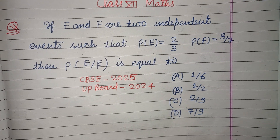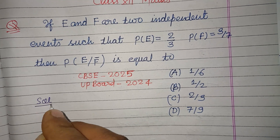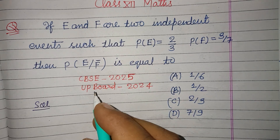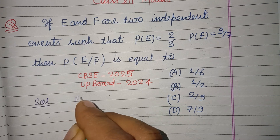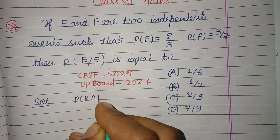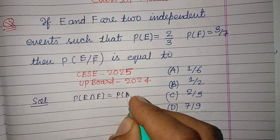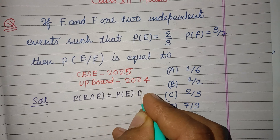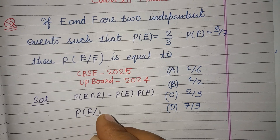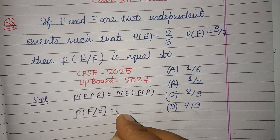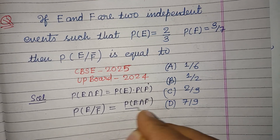then P(E|F̄) is equal to what? This question is based on probability. Since E and F are two independent events, P(E∩F) = P(E)·P(F). Here we require P(E|F̄) = P(E∩F̄) / P(F̄).